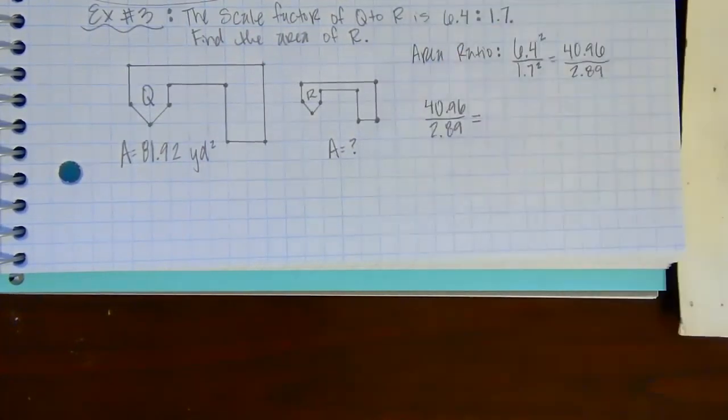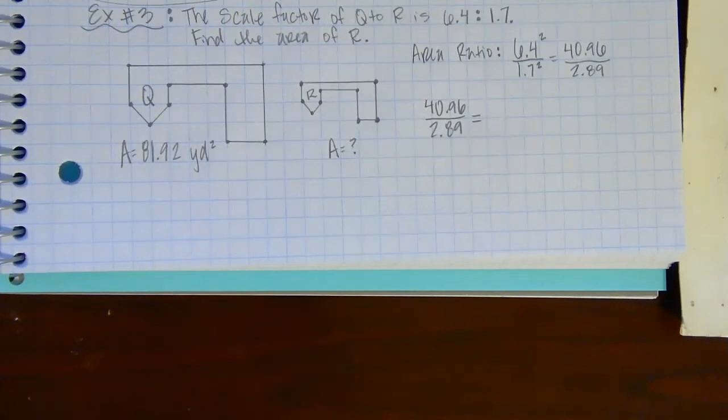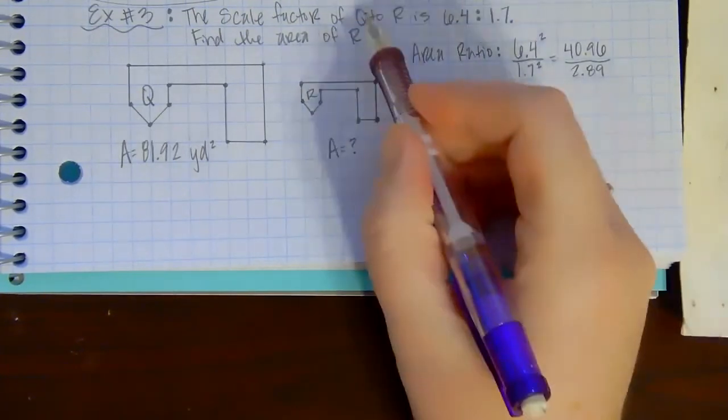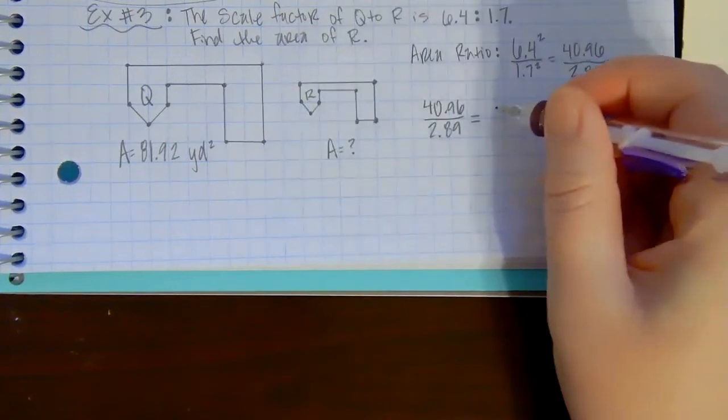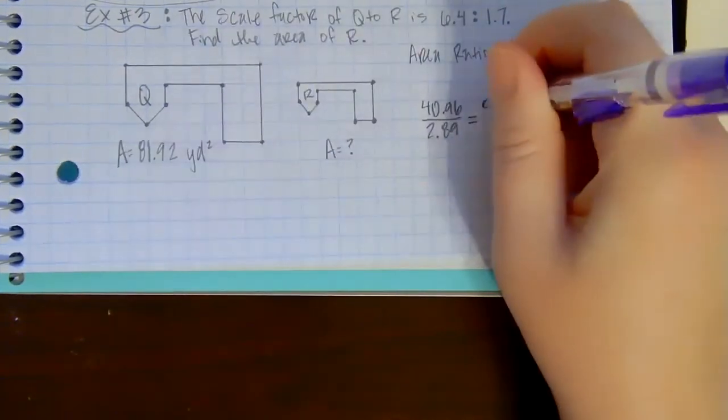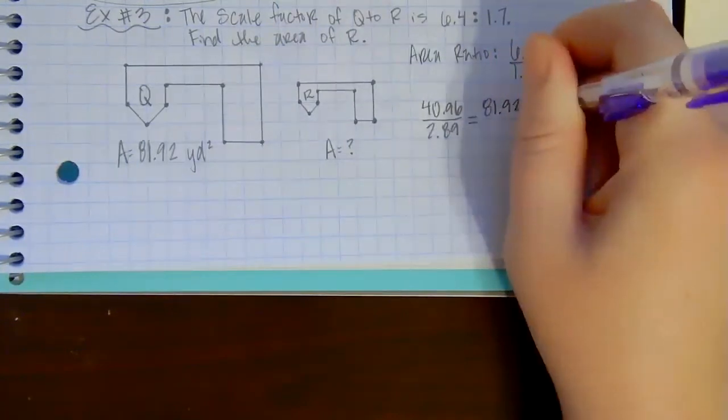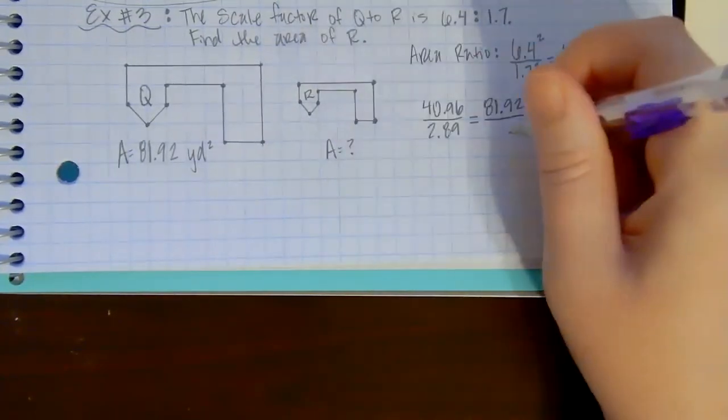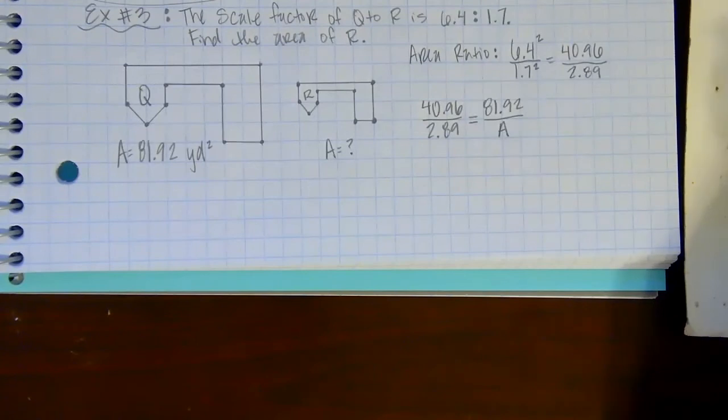So the area ratio is 40.96 over 2.89. So I can set up my similar fractions here, my proportions. This was from Q to R, so I have to make sure Q is on top again and R is on the bottom. So Q was 81.92 and R is what I don't know, I'll just call it A.